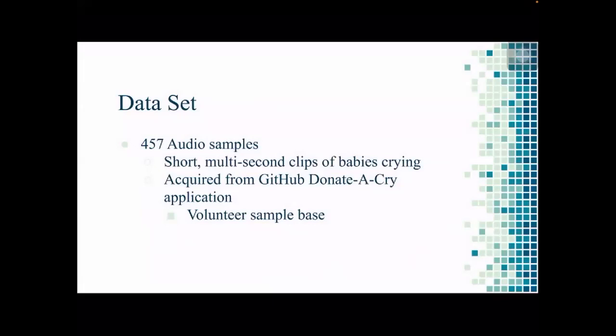Our data came from GitHub and was acquired through the Donate a Cry application for iOS and Android. Volunteer participants would submit a short, multi-second recording of a child crying, accompanied by their parents' assessment for why the baby was crying. When used, each sample was labeled by this reason and put into five groups: belly pain, discomfort, tired, hungry, and burping. This dataset was comprised of a total of 457 audio samples, 360 of which were used to train our models, 40 for validation, and 57 were reserved for testing.